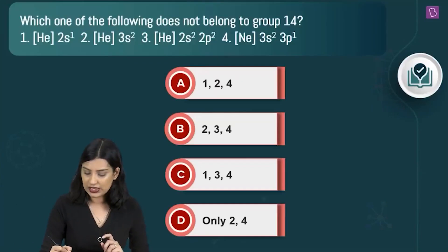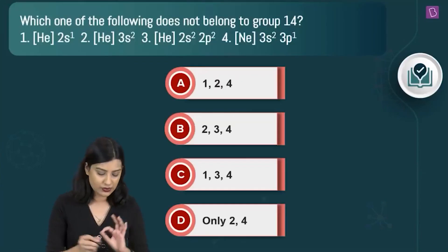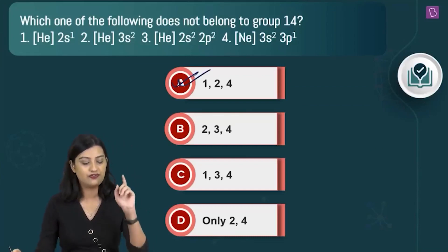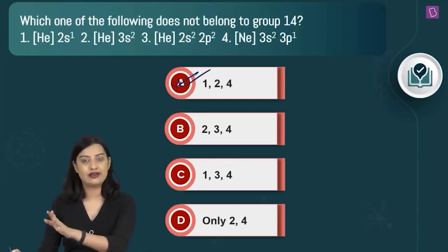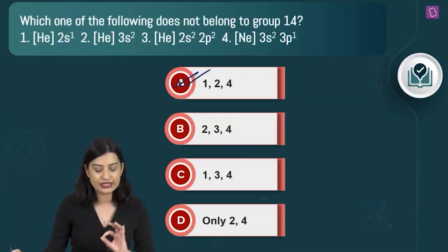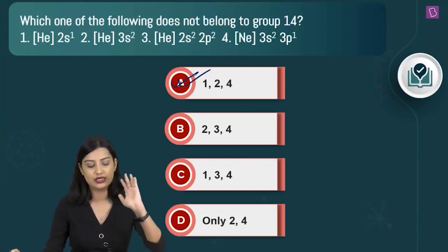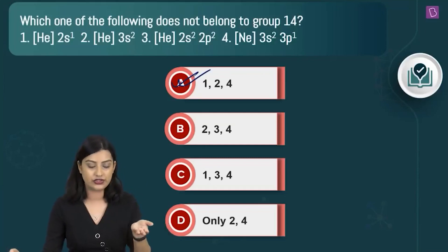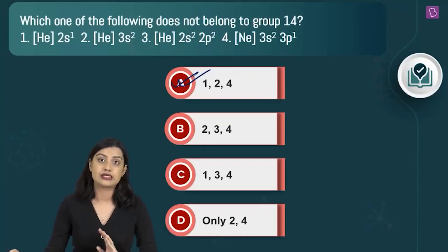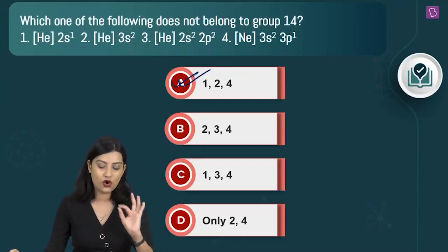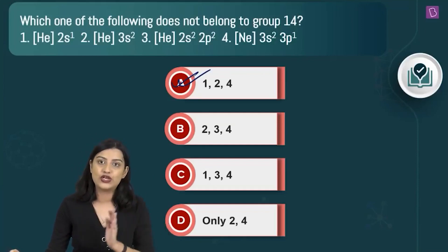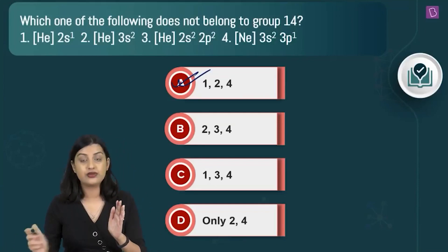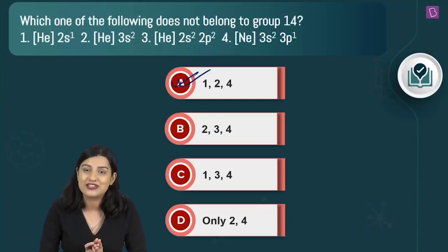The answer is options 1, 2, and 4 — they do not belong to group 14. Option 1 is an alkali metal, option 2 is not a valid electronic configuration, and option 4 is a group 13 element. So option A (1, 2, and 4) is the correct answer.